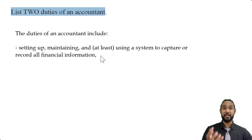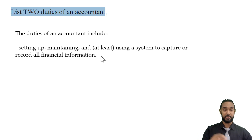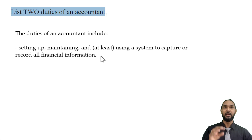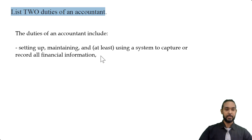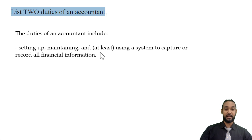An accountant is responsible for recording the financial information of an entity. So if it's a new entity, the accountant should know what systems to use to record or capture the financial information. The accountant should also be able to maintain that system — making adjustments to record new types of information as the entity evolves or as the reporting needs of the entity evolve. If the accountant is joining an existing organization and there is already a system in place, they should be able to at least use the in-place system.